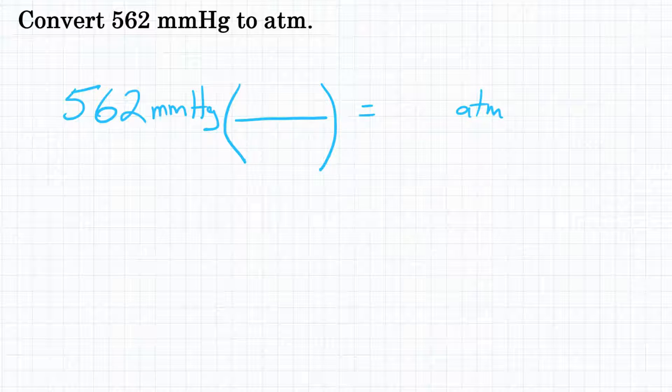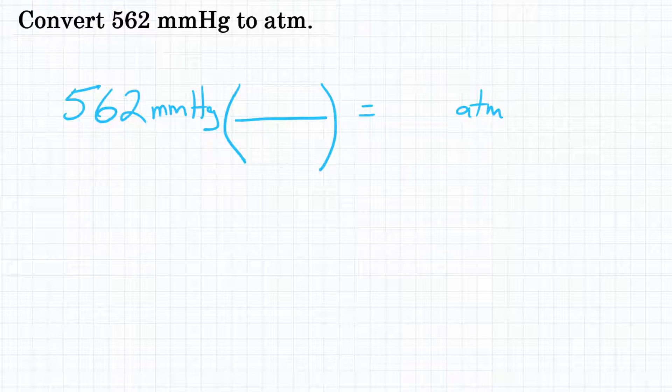For our conversion factor to solve this problem, we need to know the relationship between these two units, between millimeters of mercury and atmospheres. In other words, how many millimeters of mercury equals how many atmospheres? We need to know this relationship.